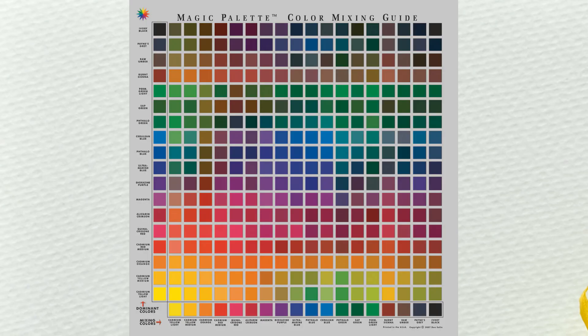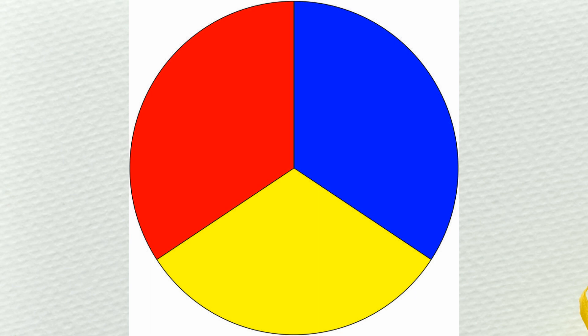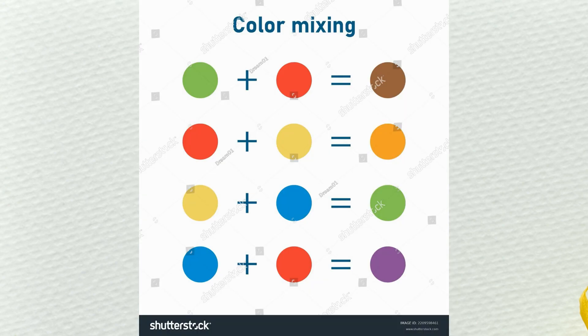Overall there are only two key points we need to understand. The first one is that only three colors are primary colors. The second one is that when we mix two colors we will get a new color. Then we also need to understand: if we are mixing two colors, what will be the resulting color?